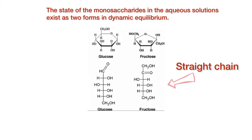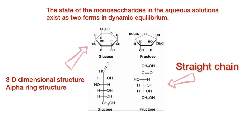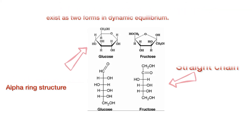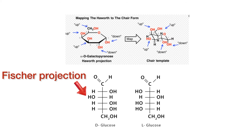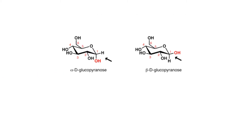Monosaccharides in aqueous solutions exist as two forms in dynamic equilibrium: a straight chain and an alpha ring structure. The alpha ring structure is a 3-dimensional structure which can be drawn in Haworth or chair conformation. The straight chain structure is 2-dimensional and can be drawn in Fischer structure.